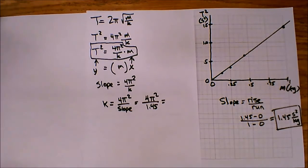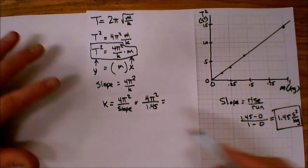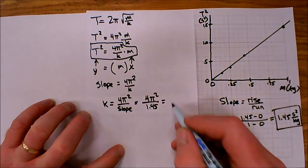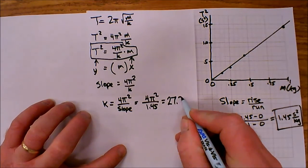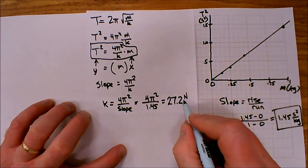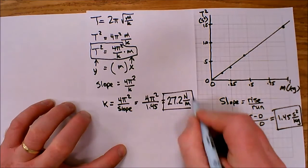And then I'm ready just to push a few buttons and find my answer. So after pushing a few buttons, I find that my answer is 27.2, and the units on that k will be newtons per meter.